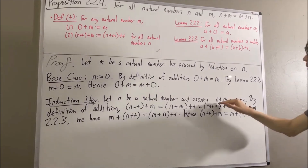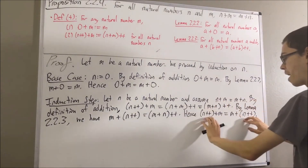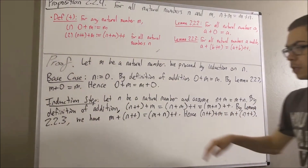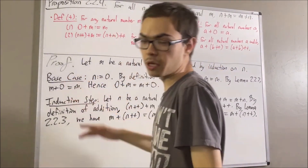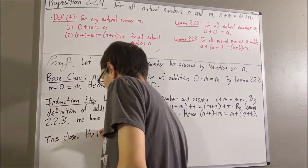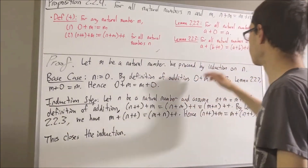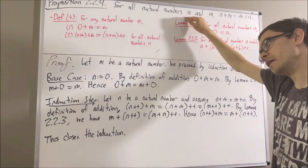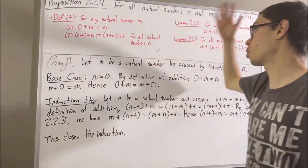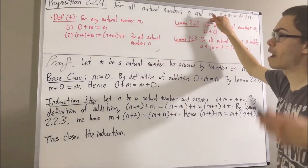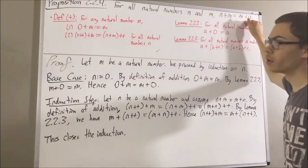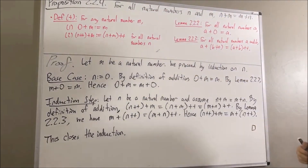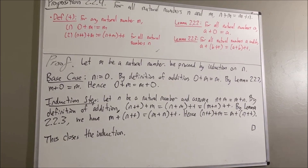So as you can see, we have proven that this is true where instead of n we have the successor of n. This completes the induction step, which means we've completed both the base case and the induction step, so this closes the induction. Because we've closed the induction, we have proven that this is true for all natural numbers n. Since m was an arbitrary natural number, this means for all natural numbers m and for all natural numbers n, this is true. So we have proven precisely what we wanted to prove. This completes the proof, and that's pretty much it for this video.